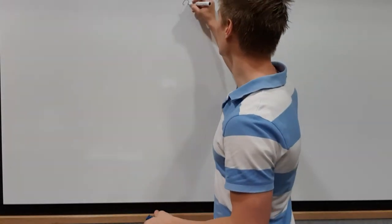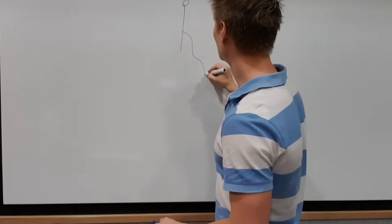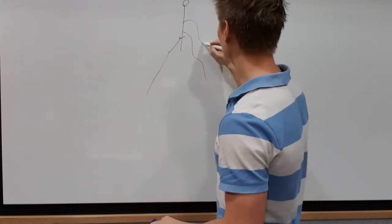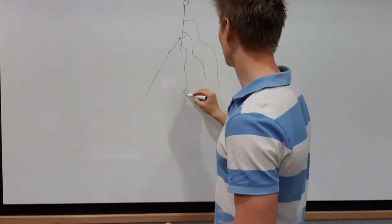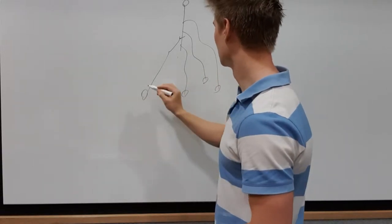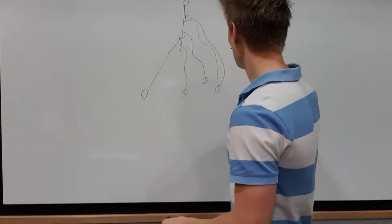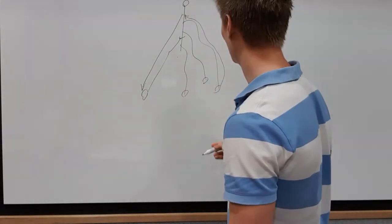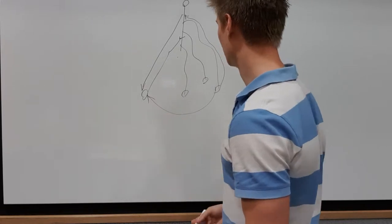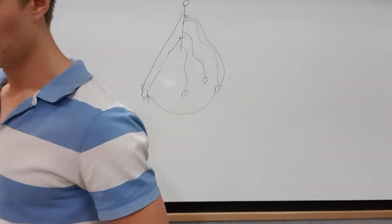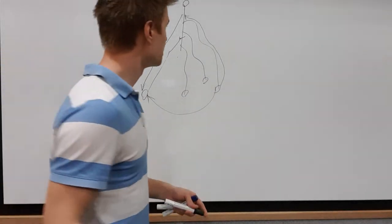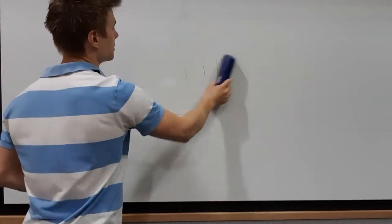Today we're going to talk about direct reprogramming, which as you can imagine is the process of instead of taking a cell - remember we have this differentiating landscape and you kind of fall down, you have these cell types - instead of going back up the terrain and then back down, we go across. We go across the terrain and we directly differentiate into our desired cell type.